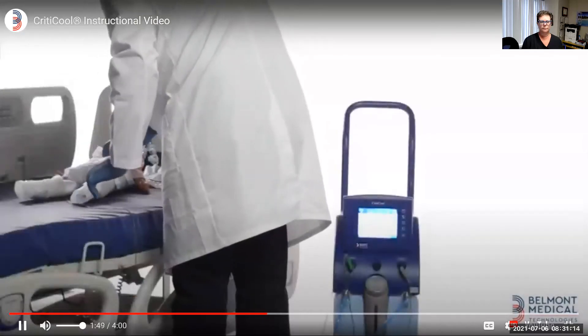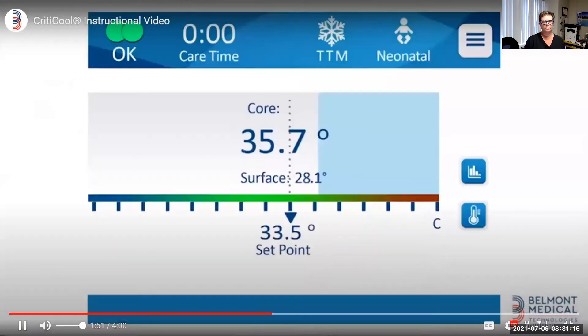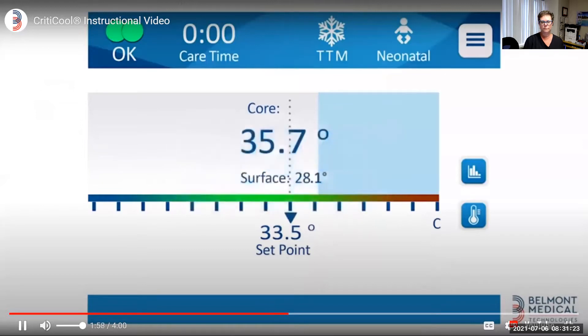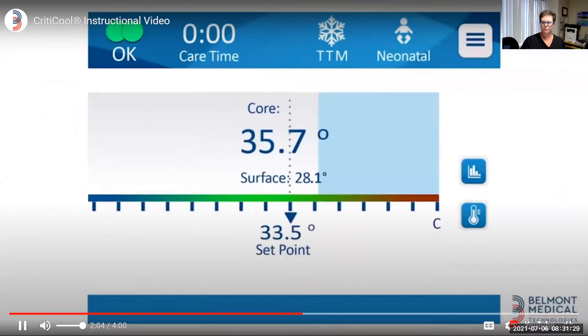Now the machine is set up and running. The default set point for TTM is 33 degrees Celsius for adults and 33.5 degrees Celsius for neonates. These settings may be changed for individual cases. Let's go over the data on the main screen.